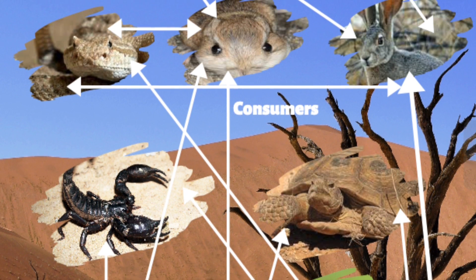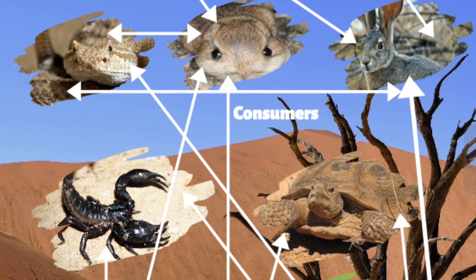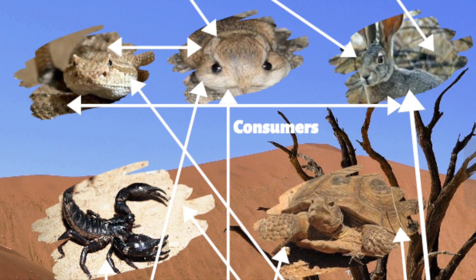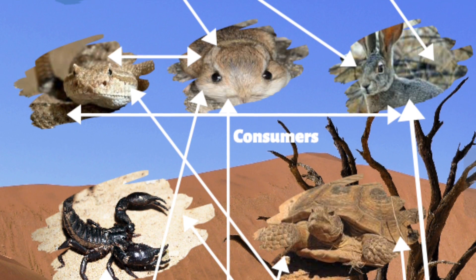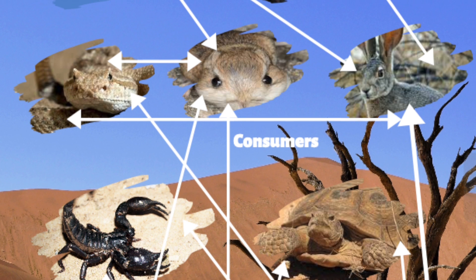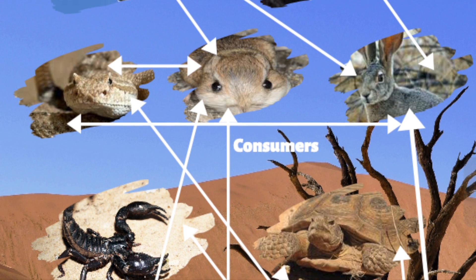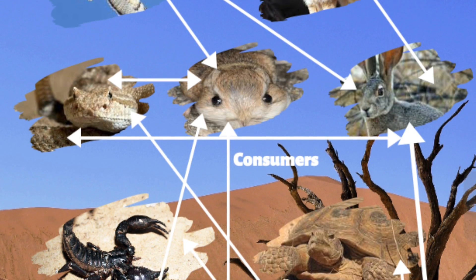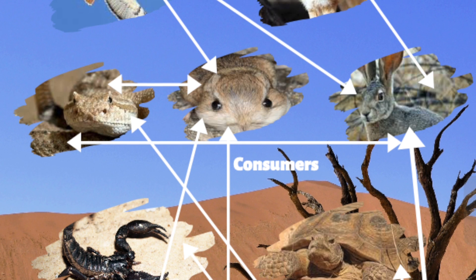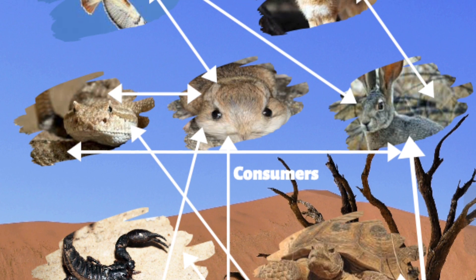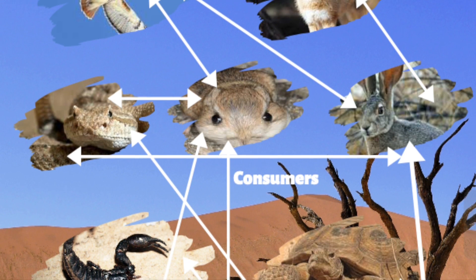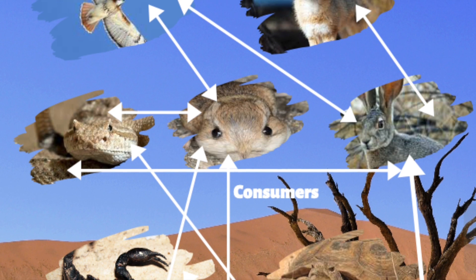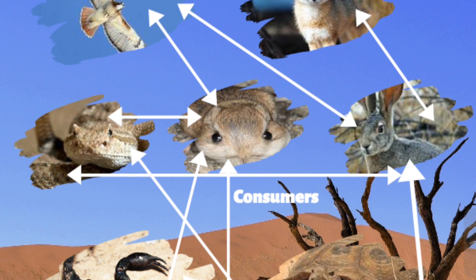At the carnivore level are the kit fox and the red-tailed hawk. The kangaroo rat is eaten by the kit fox, and the jackrabbit is eaten by the kit fox, the rattlesnake, and the red-tailed hawk. Energy in an ecosystem always flows from the sun to the producers, then to consumers, and eventually to the decomposers, which return the energy to the soil.